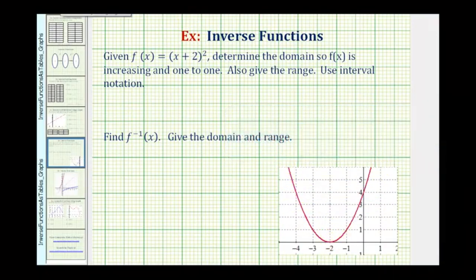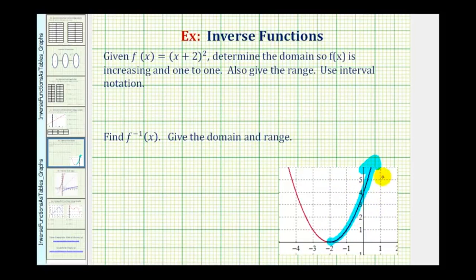Notice if we consider this function only from the vertex to the right, the function is increasing and it's also one-to-one because horizontal lines would only intersect this half of the graph at one point. So now we'll determine the domain and range if we only want this half of the graph.